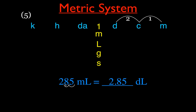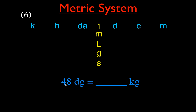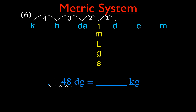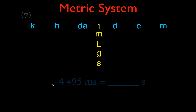Example 6: convert decigrams to kilograms. Starting at deci and going to kilo is four steps to the left. The decimal point for 48 is at the end, so we move it four places to the left, filling in two empty spaces with zeros. 48 decigrams becomes 0.0048 kilograms.